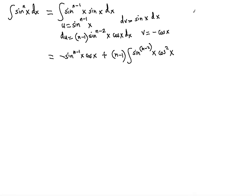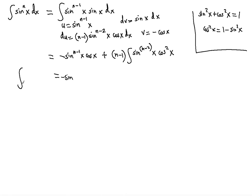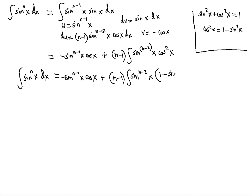Now notice that you can substitute cosine squared x using the Pythagorean identity: cosine squared x equals 1 minus sine squared x. So we can rewrite the integral of sine^n x dx as negative sine x to the n minus 1 power times cosine x, plus n minus 1 times the integral of sine to the n minus 2 of x times (1 minus sine squared x) dx.